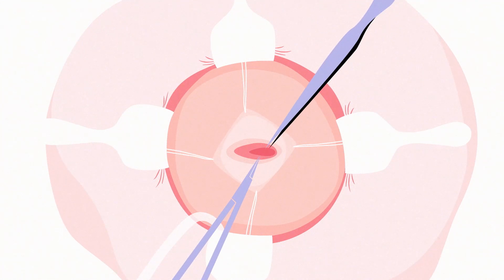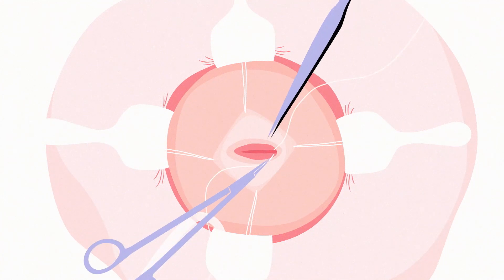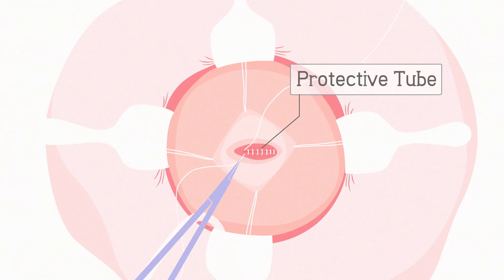The spinal cord is separated from the surrounding skin and then put back into the spinal canal. A new protective tube is then created around the spinal cord.